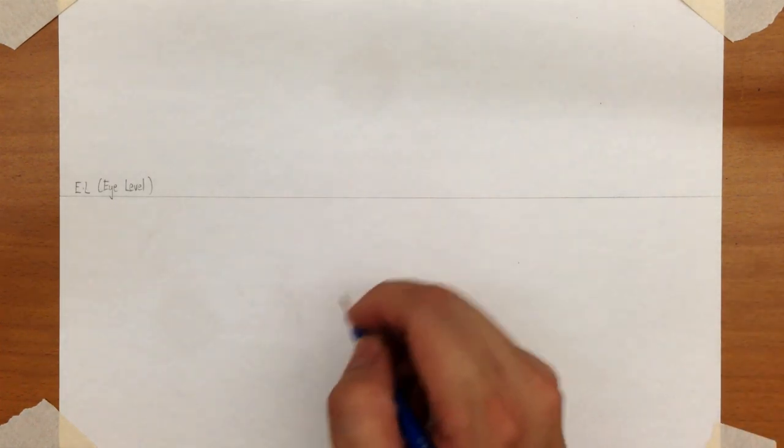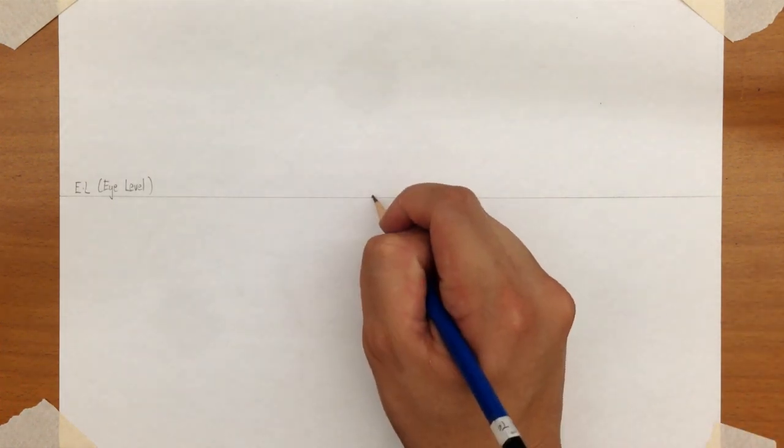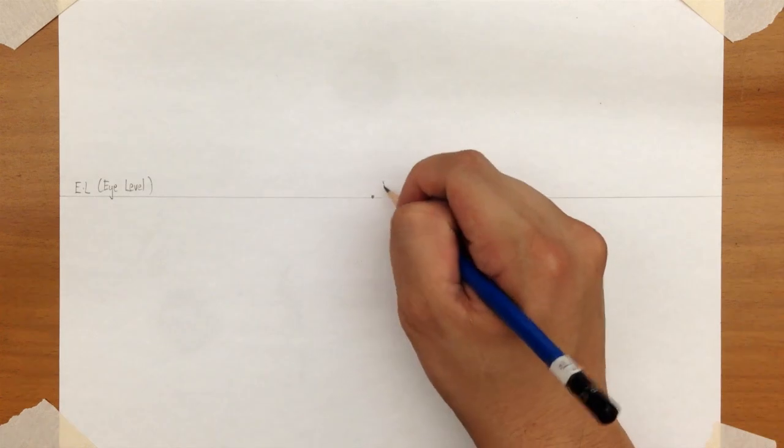The next thing you need to do, you need to put a dot right in the middle. The vanishing point in this case is in the middle, but it's not always necessary that it must be in the middle. But just for practice for this exercise, we're just going to put it in the middle.